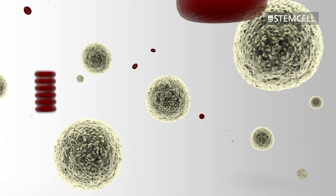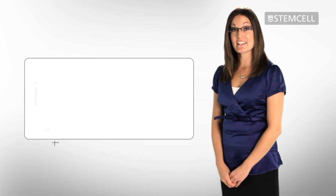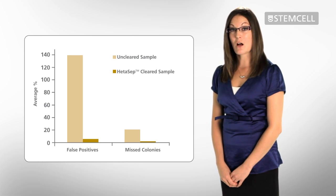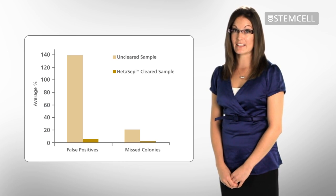Using this protocol, you can achieve more accurate CFU counts, with fewer false positives and fewer missed colonies compared to samples which have not been cleared of RBCs.